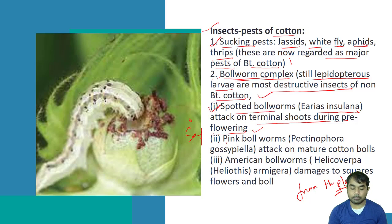The third is the pink boll worm. Its scientific name is Pectinophora gossypiella, and it attacks the mature cotton boll.